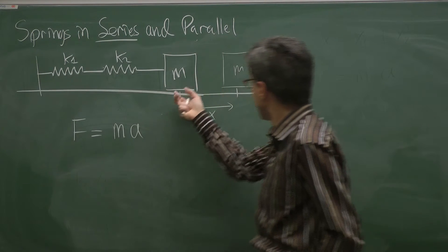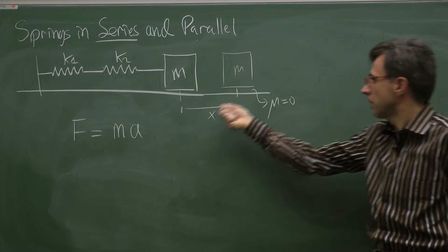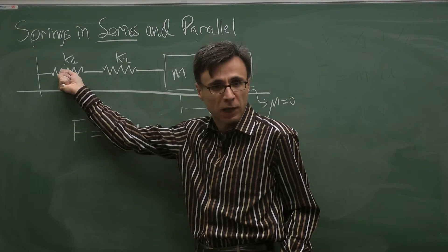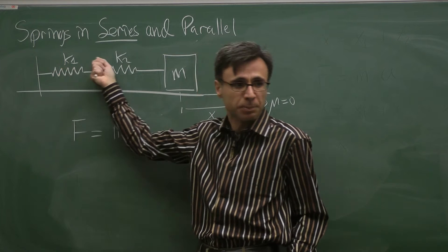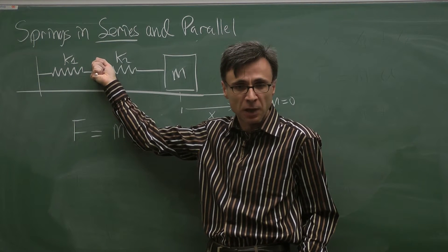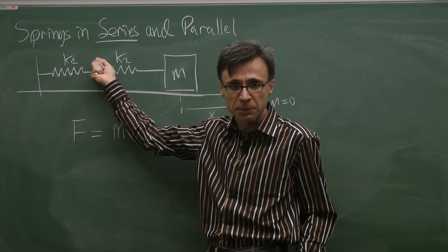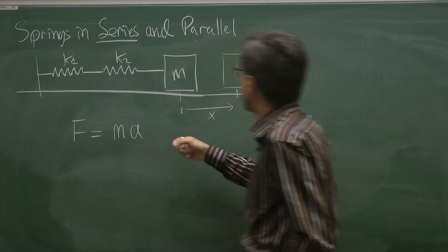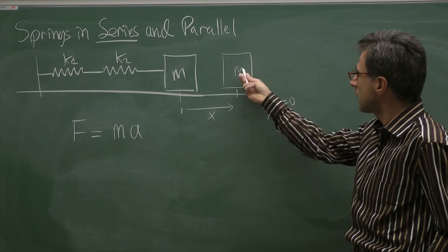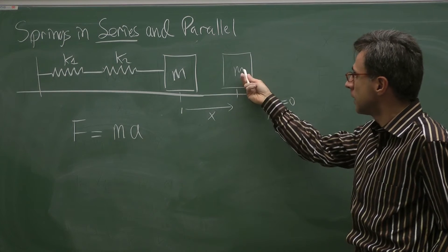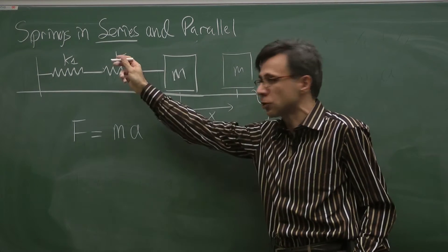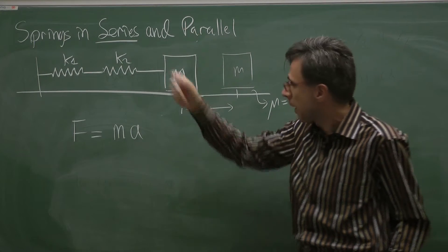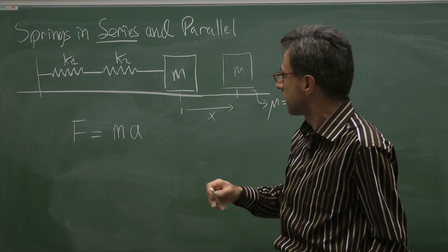If I stretch the springs by a total amount of x, this spring is going to be stretched by x1 and that spring is going to be stretched by x2. So the total displacement is going to be x1 plus x2. Note that the force applied on this mass is going to be in the opposite direction of the displacement.